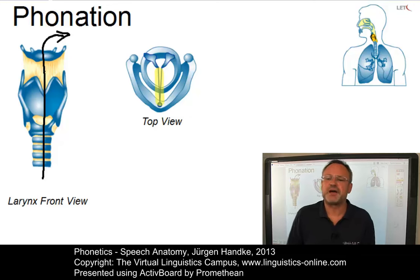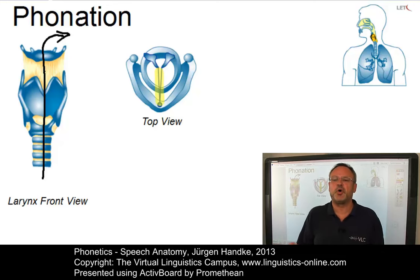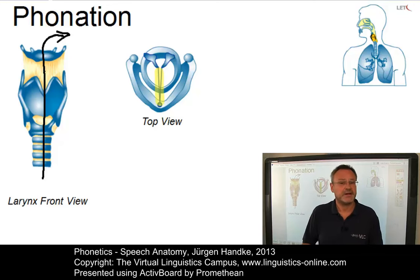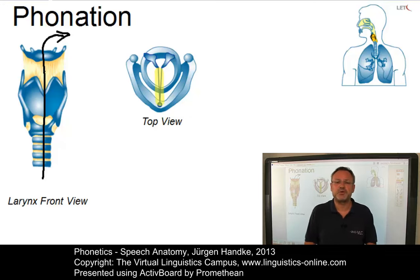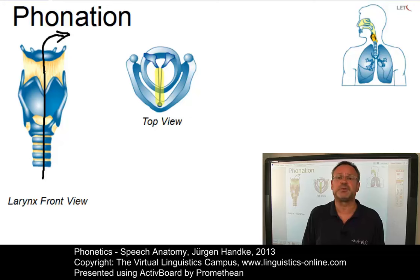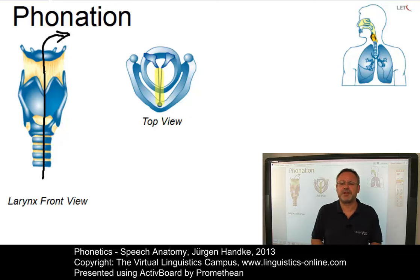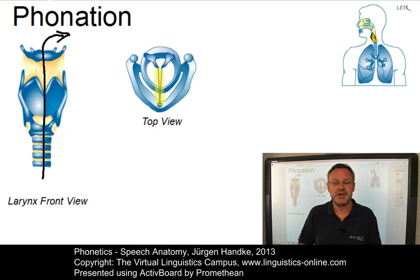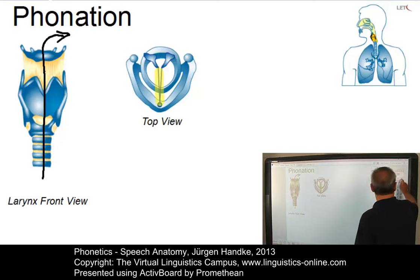Each pulse of vibration represents a single opening and closing movement of the vocal folds. The number of cycles per second depends on age and sex. Average male voices vibrate at around 120 cycles per second; women's voices average something like 220 cycles per second. Depending on the type of laryngeal action, different modes of phonation can be distinguished. Let's look at them in detail.